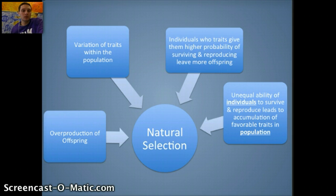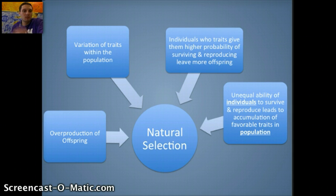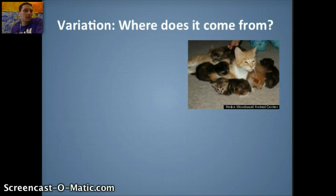All of those combine to drive the selection factor called natural selection, which is really the driving force for evolution. Our good friend Charles Darwin is the creator behind the idea of natural selection — that populations change based off of these different combining factors. So let's first talk about variation and where it comes from.